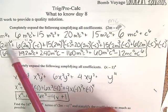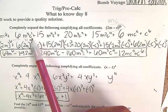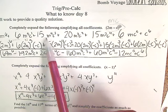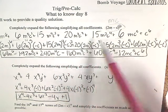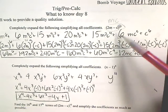So we get m to the 6th plus 6m to the 5th c to the 1st plus 15m to the 4th c squared plus 20m to the 3rd c to the 3rd plus 15m squared c to the 4th plus